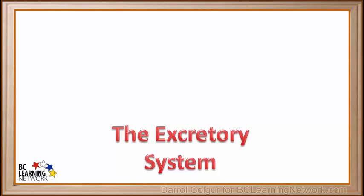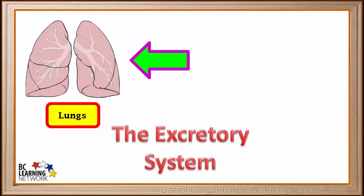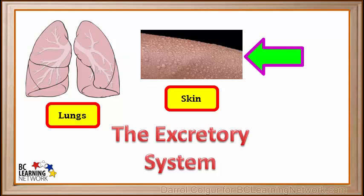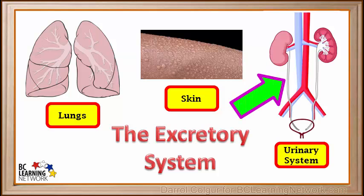The three main parts of the excretory system in the body are the lungs, which remove waste gases like carbon dioxide and excess water vapor; the skin, which releases waste dissolved in perspiration; and the urinary system, which removes waste in the form of urine.